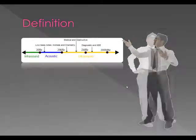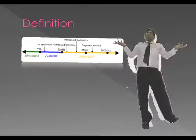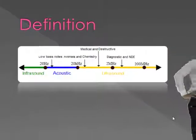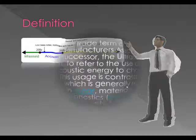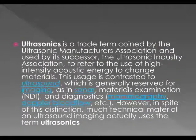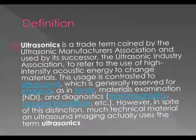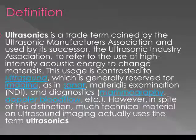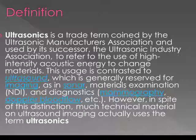Still in the definition, as we can see inside the figure, the range of ultrasound is between 20 kilohertz to 200 megahertz. Ultrasonic is a trade term coined by the Ultrasonic Manufacturers Association and used by its successor, the Ultrasonic Industry Association, to refer to the use of high intensity acoustic energy to change materials.